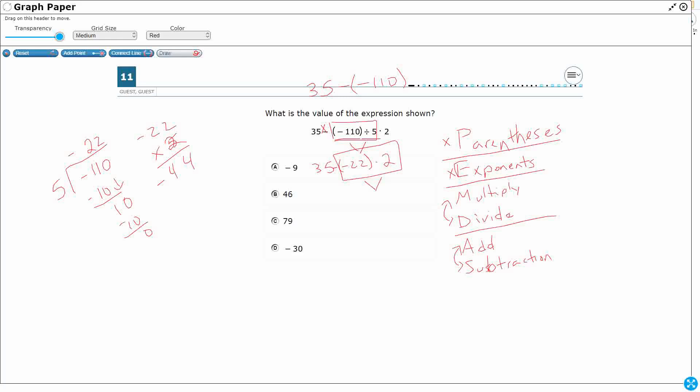So that simplifies to 35 minus, I haven't messed with that minus yet, 35 minus this negative 44. So first, because we're down to the end here, I divided the negative 110 by 5 to get the negative 22.